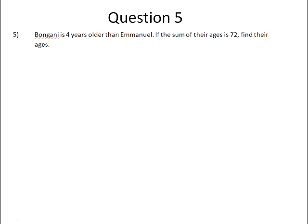And then finally, question 5. Bongani is 4 years older than Emmanuel. If the sum of their ages is 72, find their ages. Okay, so in any story sum, we start off by letting their ages be equal to variables. So we're going to let Bongani's age be x, and we're going to let Emmanuel's age be y.